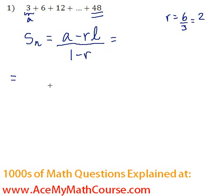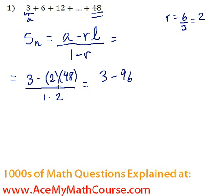So 3 minus RL all over 1 minus 2. Here we have negative 96, because 2 times 48 is 96, all over negative 1.